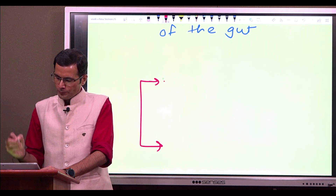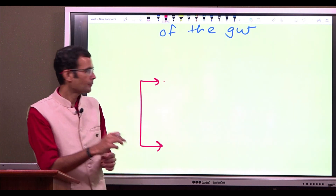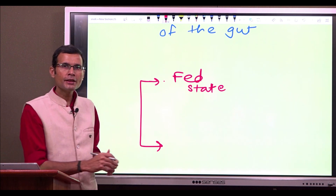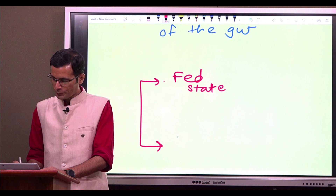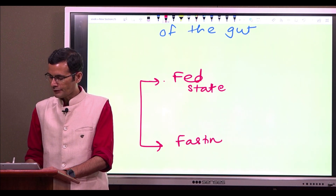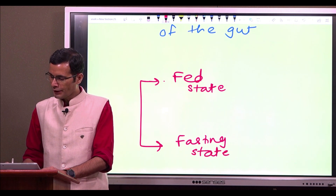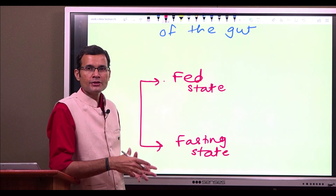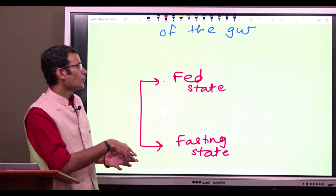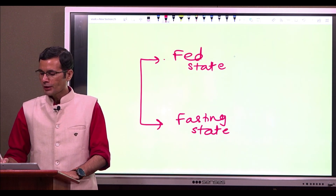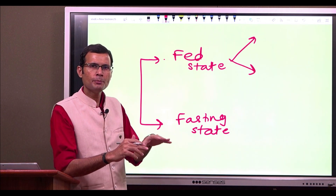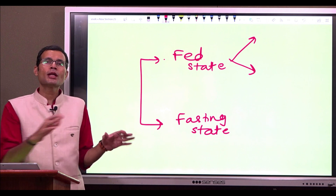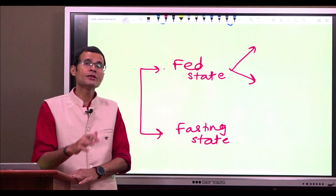Gut motility should be seen in two contexts: in the fed state, how is the motility in the digestive tract, and then in the post-absorptive or fasting state, when the intestines are absolutely empty. In the fed state, after eating food, there are two types of movements in the digestive tract, particularly in the small intestine.